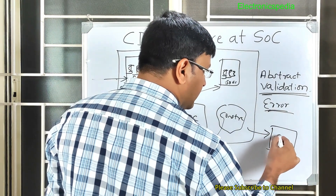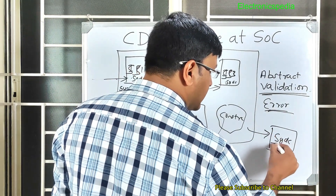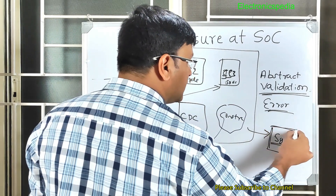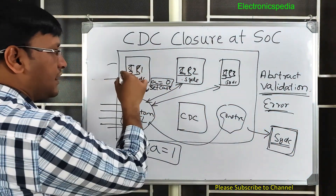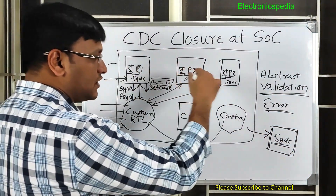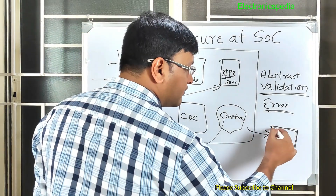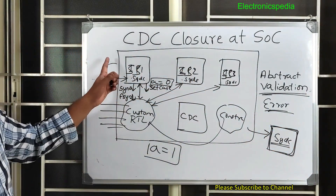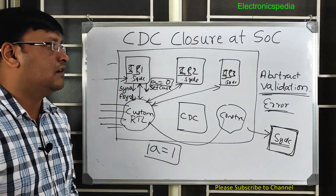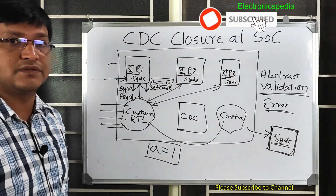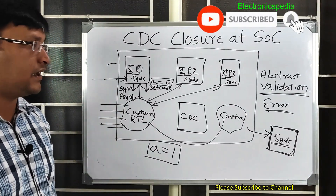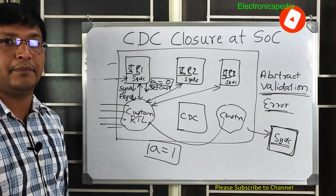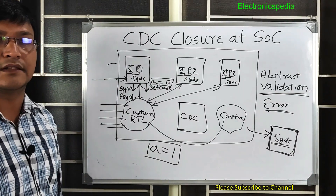Finally, once all errors are resolved, the SOC-level abstract model — a .stdc file — is generated. It contains all information about the top-level IO ports and internal logic. This is how CDC is closed at the SOC level. Please leave any queries in the comment section — I'll be happy to help. Thank you.